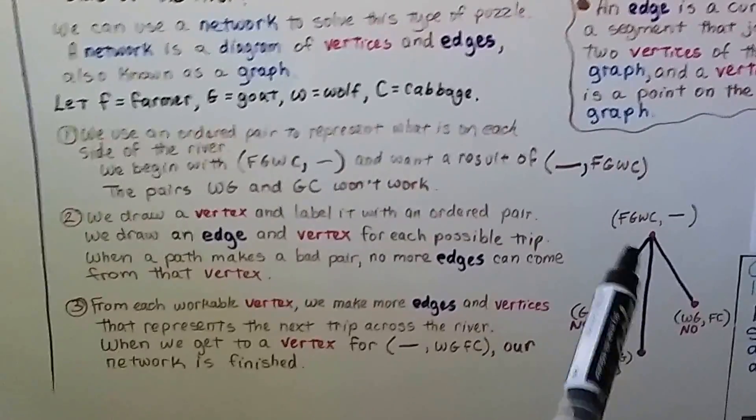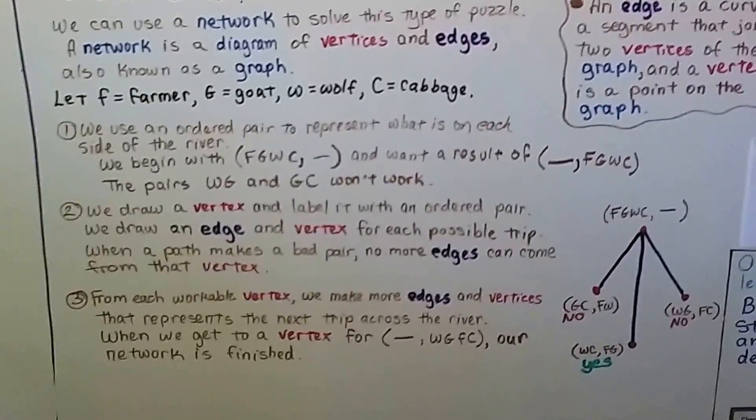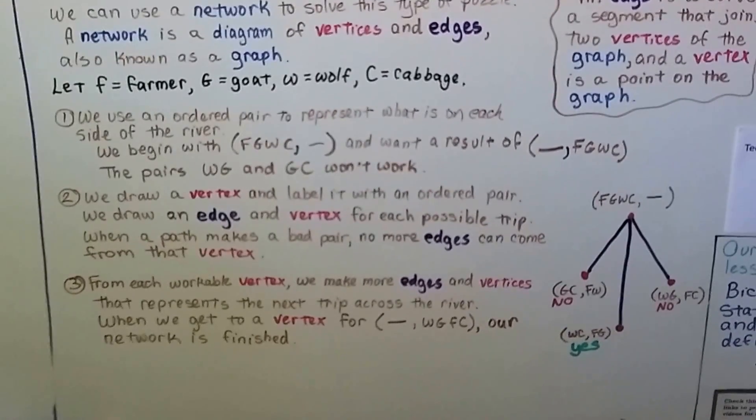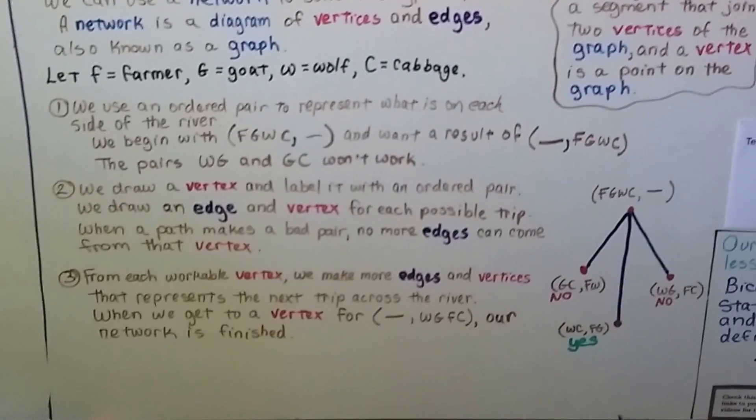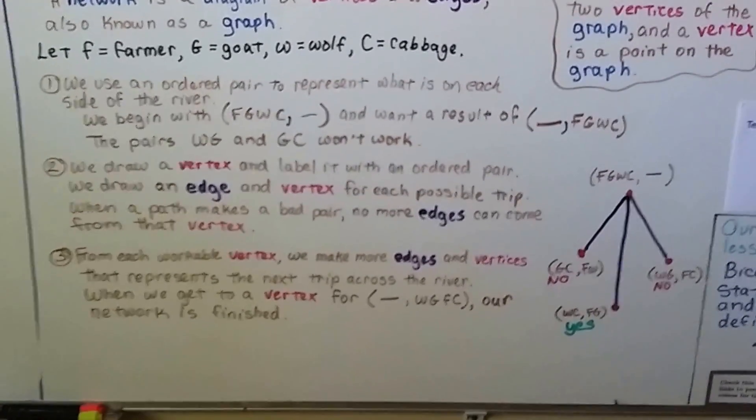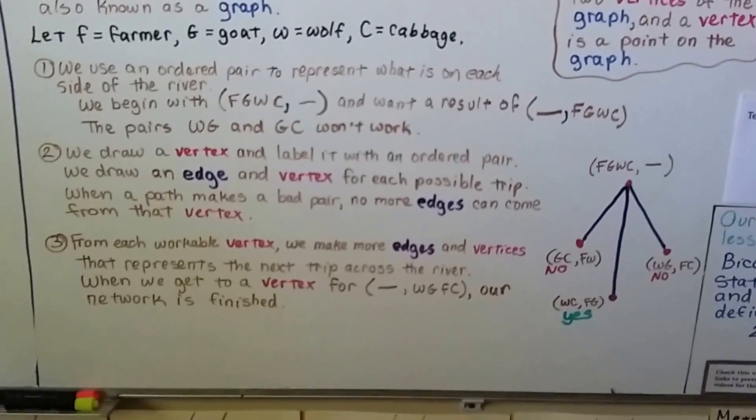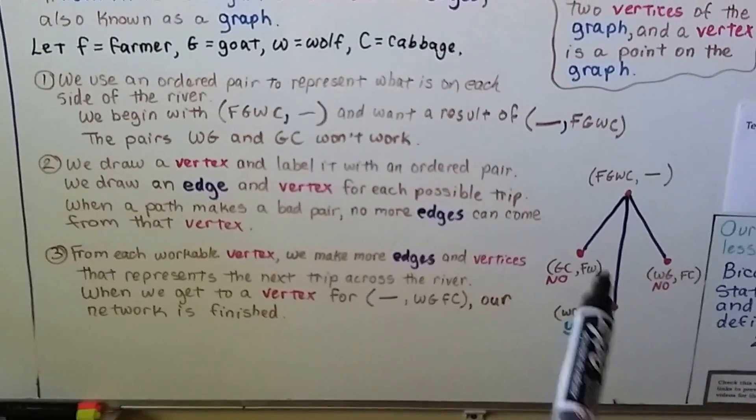We draw a vertex and label it with an ordered pair. We draw an edge and a vertex for each possible trip. When the path makes a bad pair, no more edges can come from that vertex.